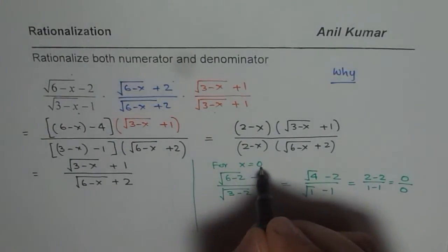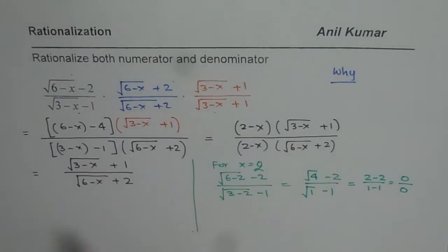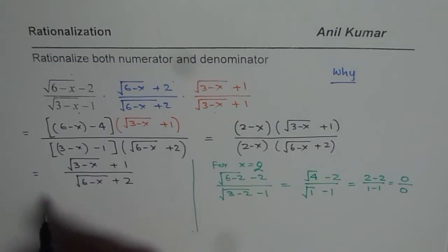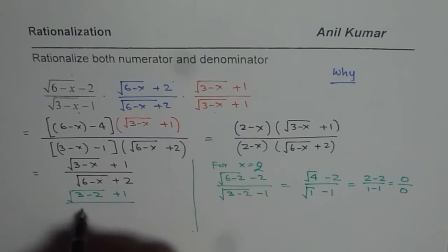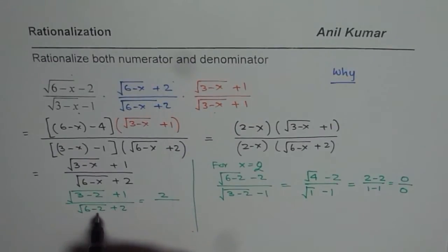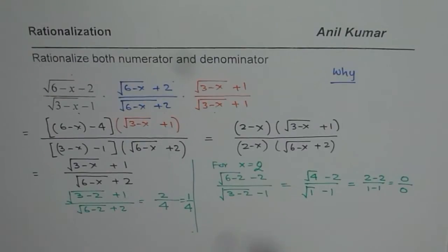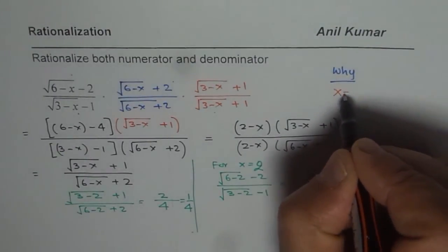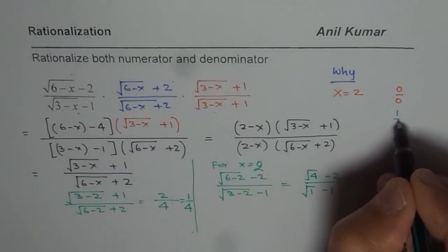So for x equals 2, substituting into the original expression gives 0 over 0. Now if I do the same substitution in the rationalized expression, I get square root of (3 minus 2) plus 1 divided by square root of (6 minus 2) plus 2. That is 1 plus 1 equals 2 in the numerator, and square root of 4 is 2, so 2 plus 2 equals 4 in the denominator. We get the answer as 1 over 4.